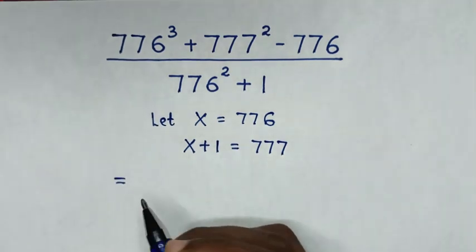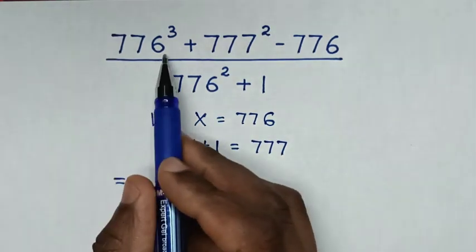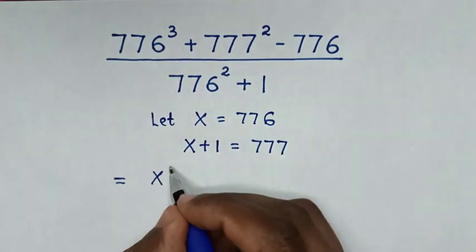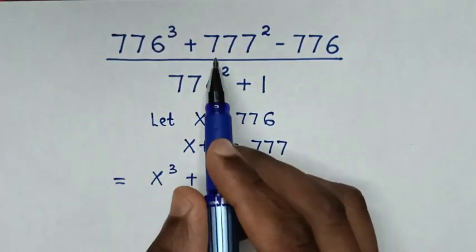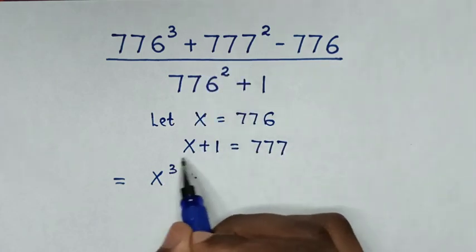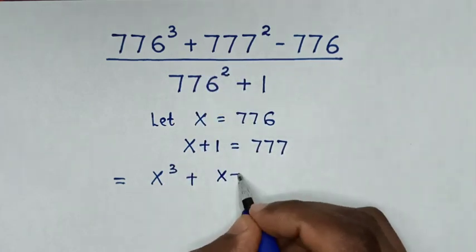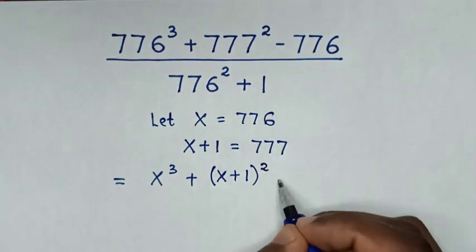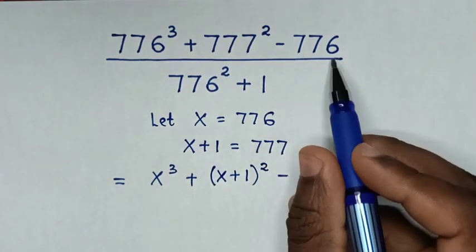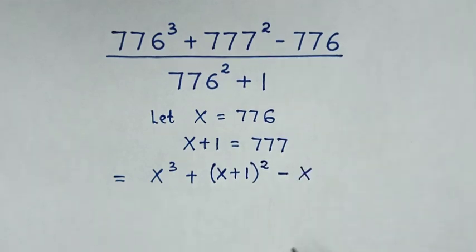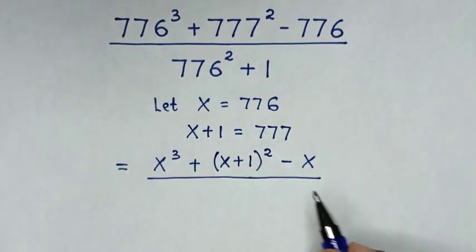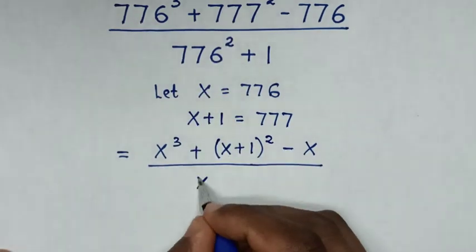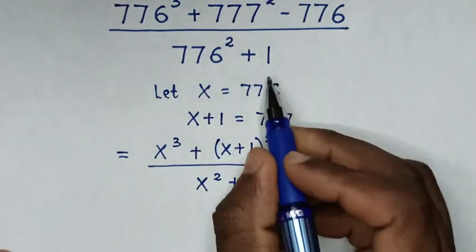Then it will be equal to: from here 776 is x, so it will be x power 3, then plus 777 is x plus 1, so it will be x plus 1, bracket, power 2, then minus 776 which is x, over 776 which is x, so x square, then plus 1.